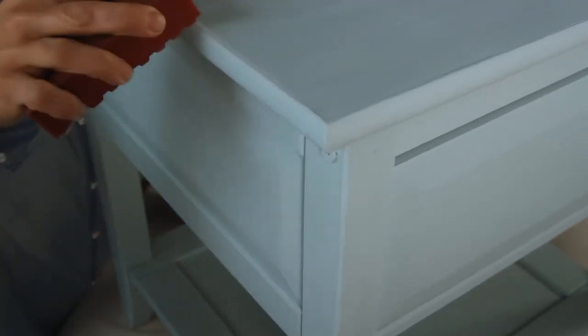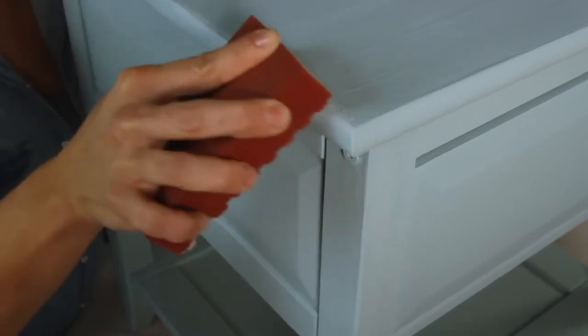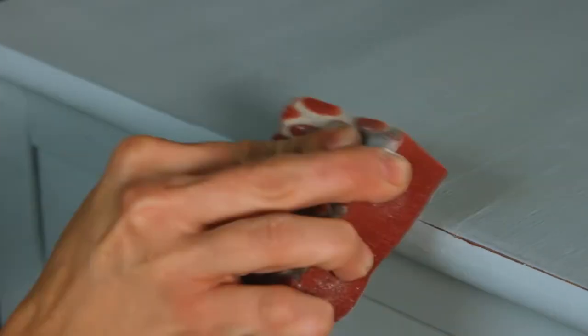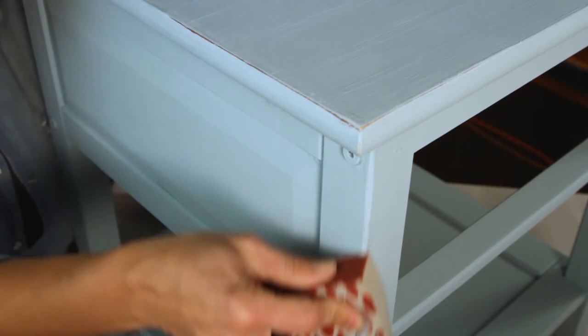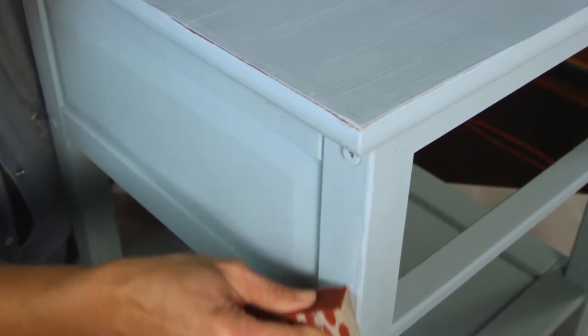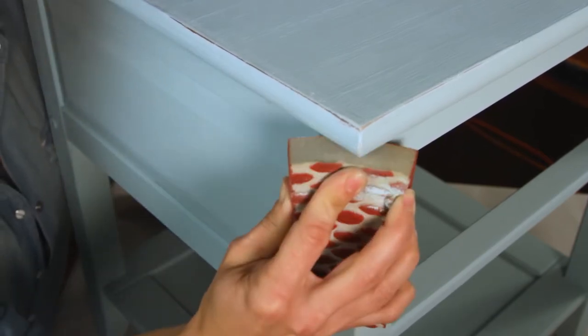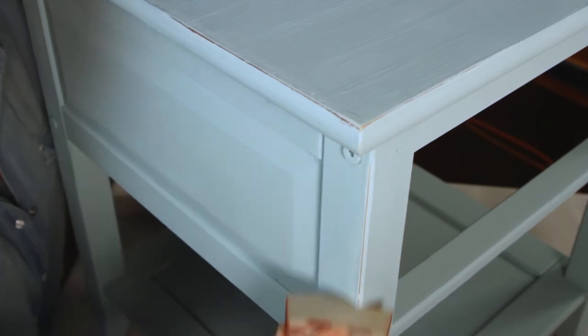The easiest way to distress chalked paint is with fine to medium, 180 to 220 grit sandpaper. Hold the sandpaper with the tips of your finger and sand the corners and edges of your piece to get the desired look. The more you sand, the more the original finish will show through. For rounded surfaces, wrap the sandpaper around the surface.